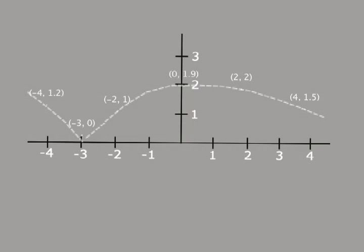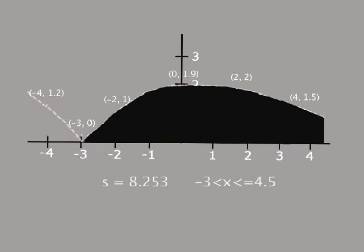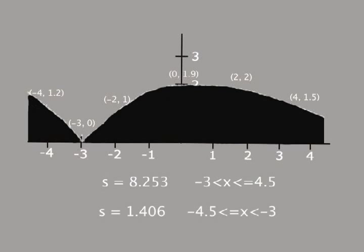Plug in the first equation into the calculator and integrate it from negative 3 to 4.5. Next, we will plug in the second equation into the calculator and integrate it from negative 3 to negative 4.5.